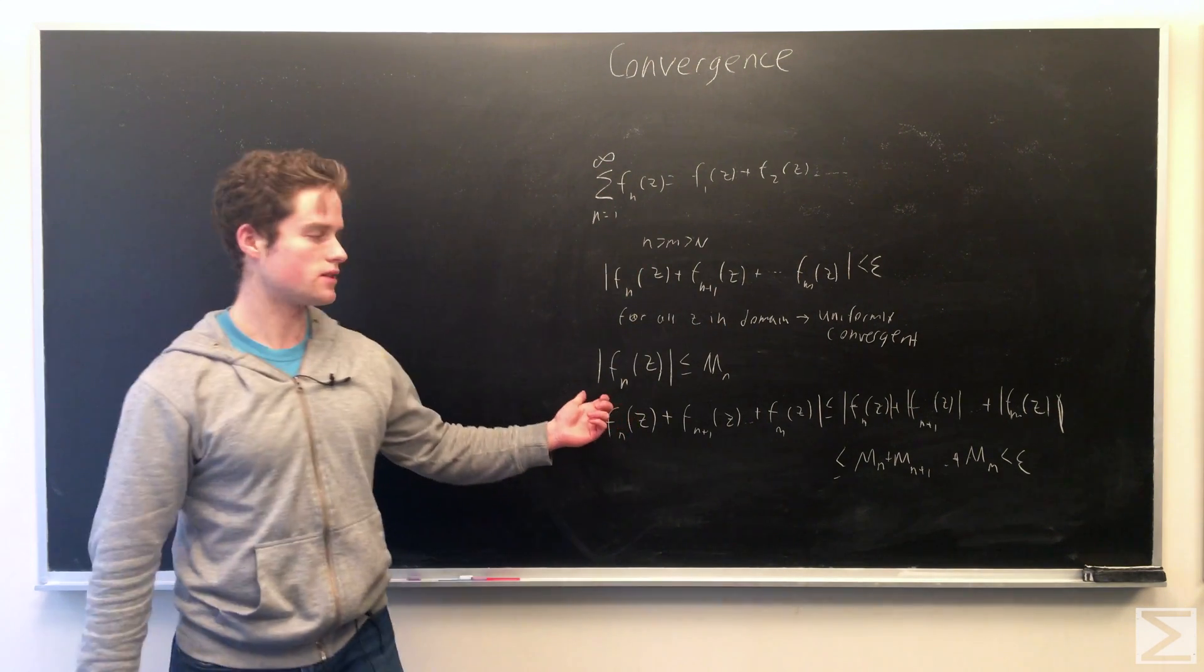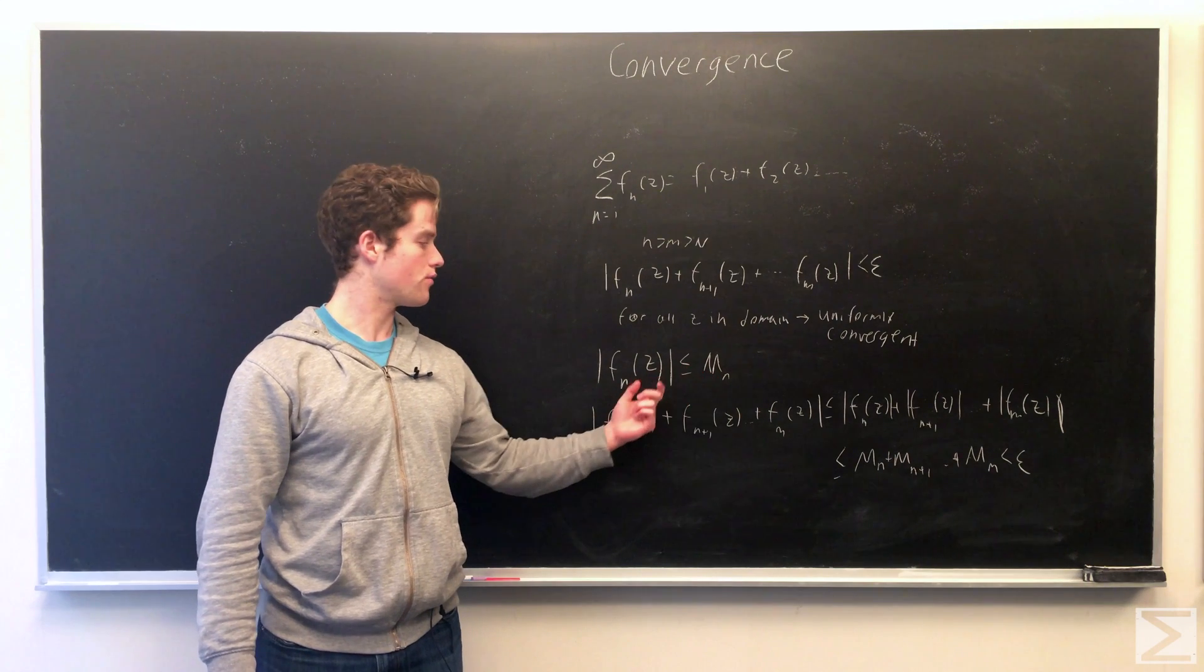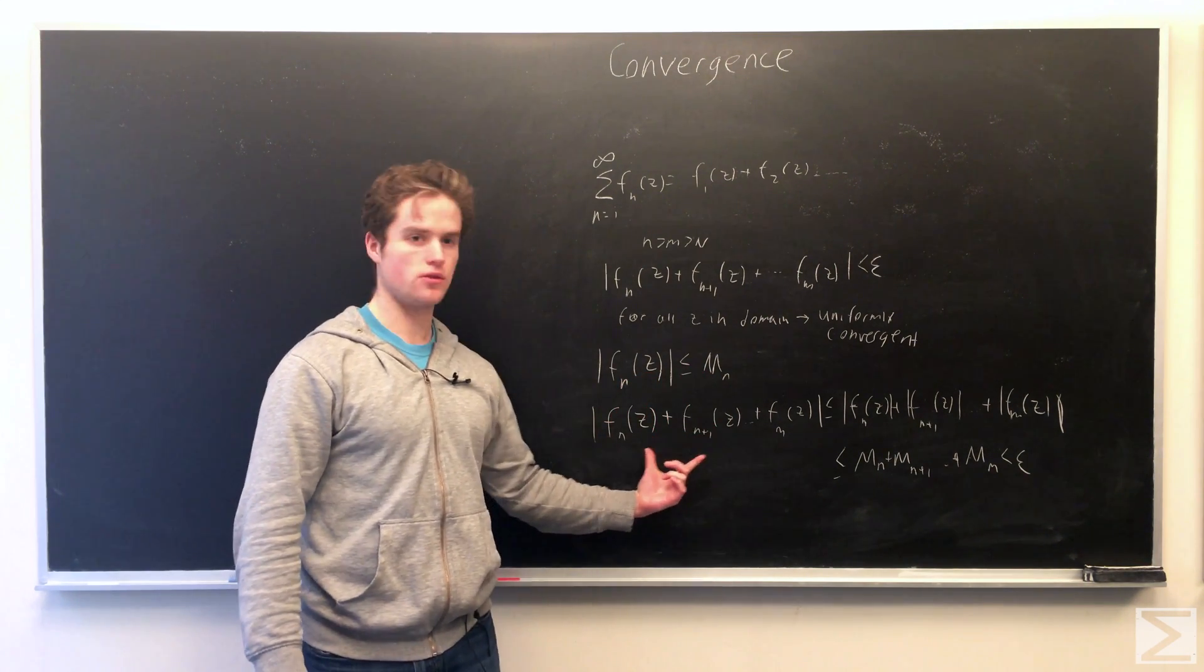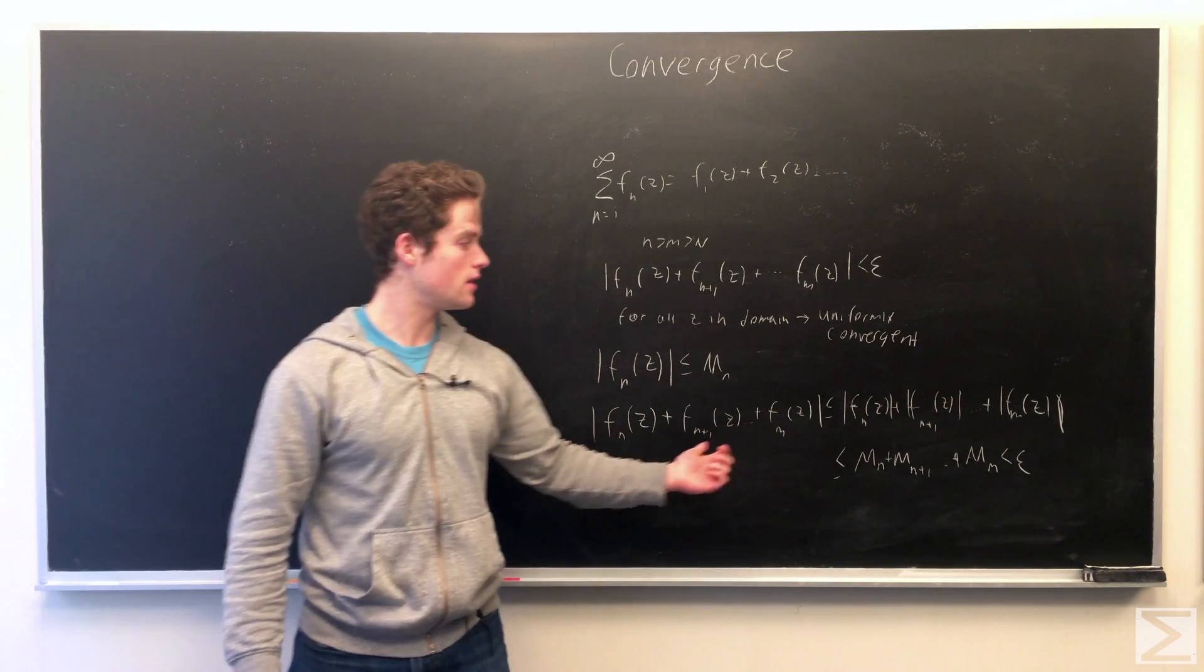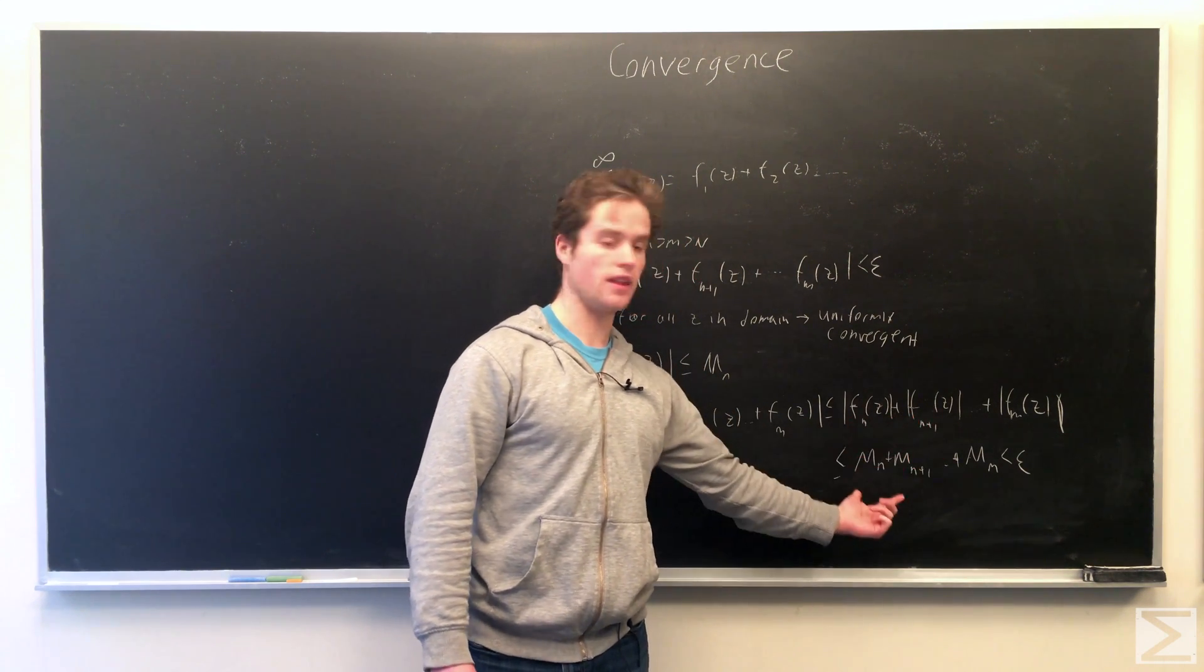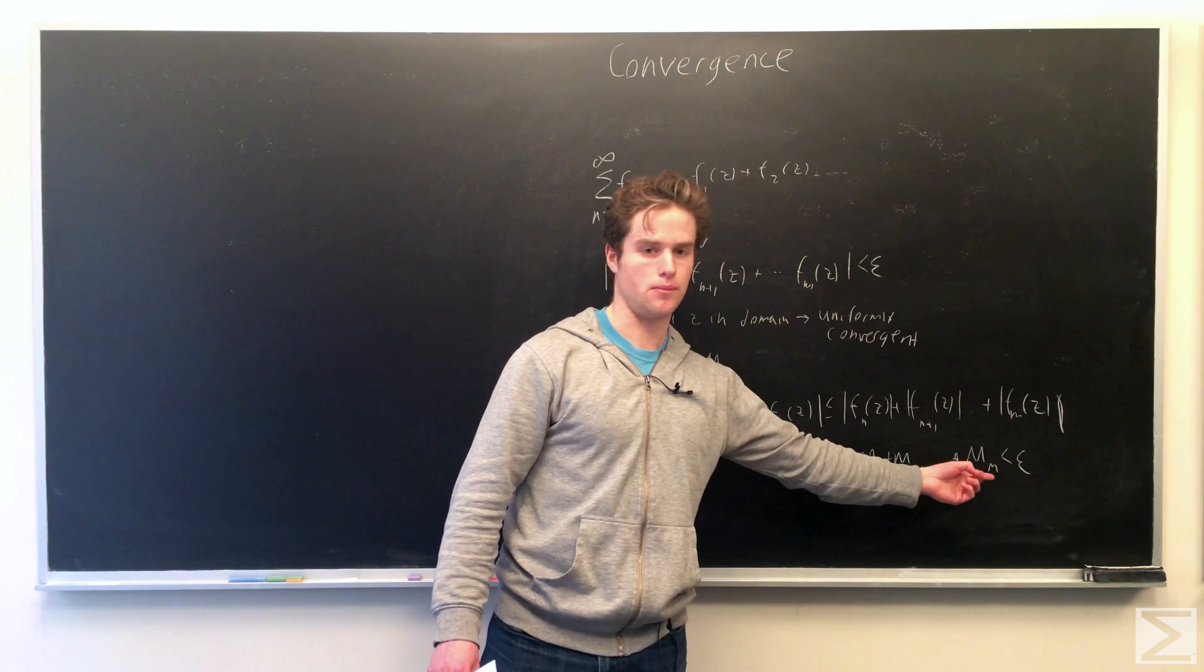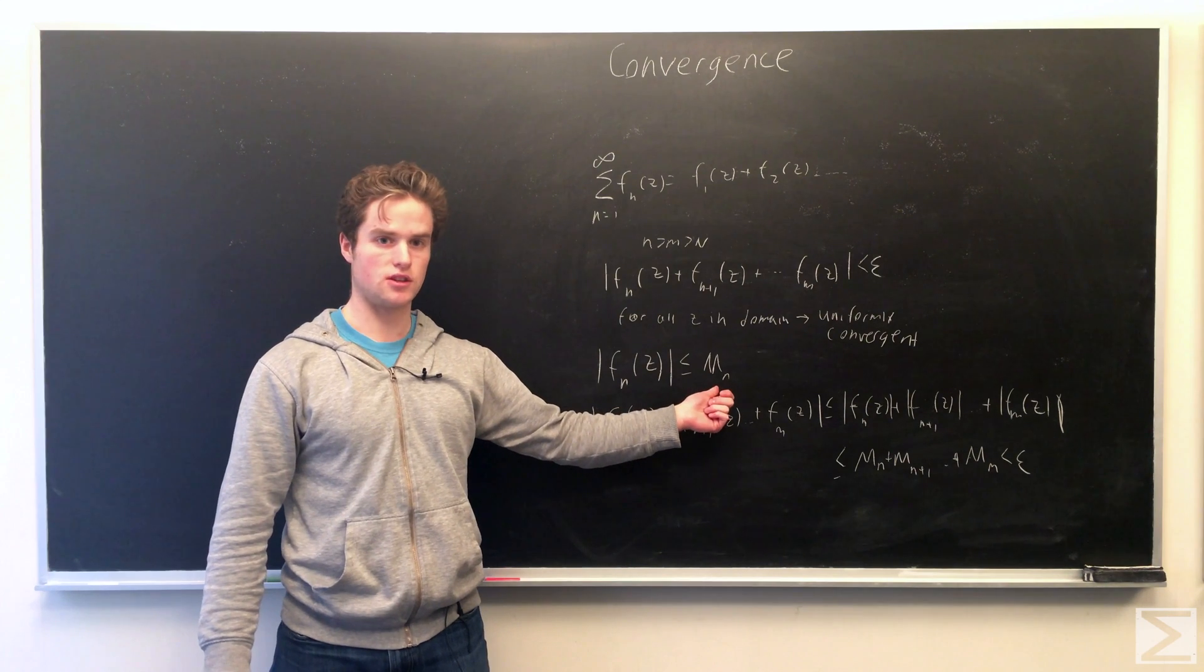So if we say the moduli of f of n of z is less than M of n for all z in our domain, then we can say our partial sum here, f of n of z to f of M of z, using the triangle inequality, we can split up the moduli. And then these are all less than Mn to Mm.